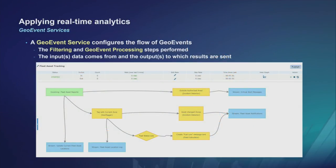When we talk specifically about real-time analytics, we're assuming data is already coming in and going out. The analytics are handled within the context of a geo-event service. A geo-event service is composed of various geo-event elements, including inputs and outputs, but more specifically the processing nodes and filters shown in the yellow rectangles and diamonds. The role of an input connector is to take a stream of data and convert it into discrete messages called geo-events, which are then acted upon by the various nodes and filters before being sent to the configured outputs.